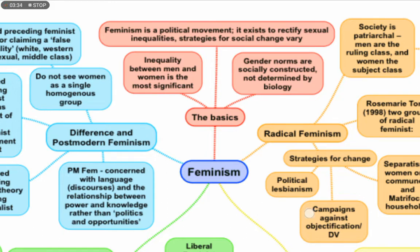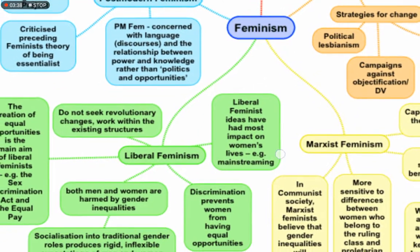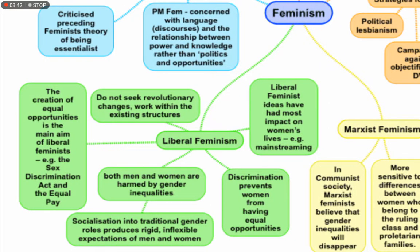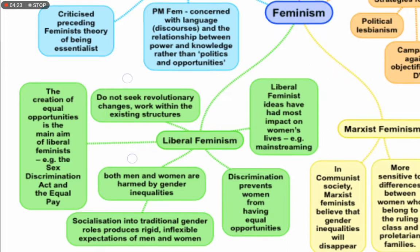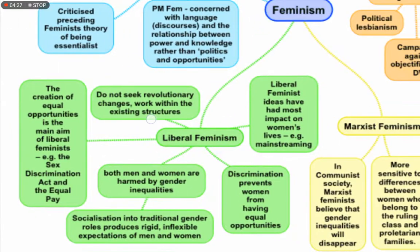Talking about the theorists, first we will talk about the liberal feminists. Liberal feminists do not seek revolutionary changes. They want to work within the existing structures. Liberal feminists do not believe that the current structure needs to be overthrown. They believe that even keeping the system intact, women can be given rights equal to those of men. How do they believe that inequality can be done away with within the existing structure? They believe there should be creation of equal opportunities regardless of sex.